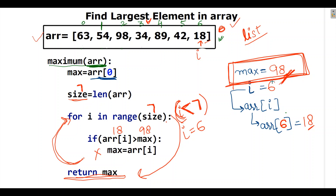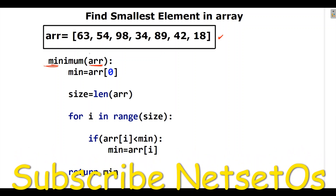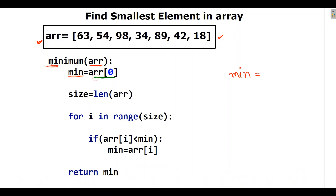Now let's see how to find the smallest element in an array. Similarly, we have the same array and a function defined with ARR as the input. We initialize a variable 'min' to the first element of the array, which is 63. The size is 7, and we enter a for loop where i works from index 0 to index 6.